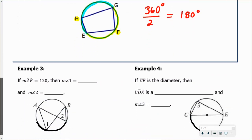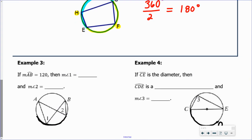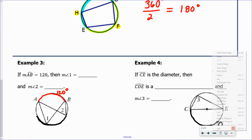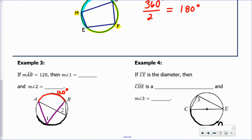Now let's look at examples of how to apply each of those corollaries. Example three shows how to apply corollary number one — if two inscribed angles intercept the same arc, they are congruent. We know the measure of arc AB is 120 degrees, and we need to find angle one and angle two. Both angles intercept that same 120-degree arc, so each must be half of that — both angles measure 60 degrees.